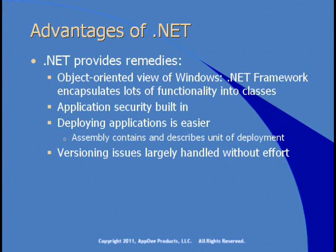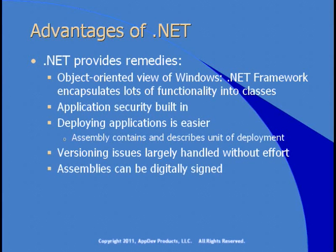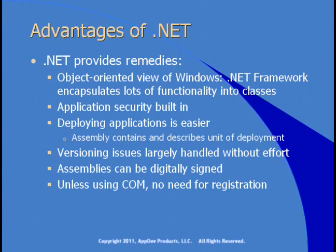You don't need to worry about versioning issues. How many times have you built applications and then attempted to deploy a newer version and dealt with all the issues involved? The .NET runtime largely handles those issues without much effort on your part. Assemblies can be digitally signed — using Authenticode as one of the options, users can see who authored the application. This helps users make intelligent decisions about which applications are safe to install and run. And unless you're using COM, there's no need for registration — you don't need to write things to the Windows registry.